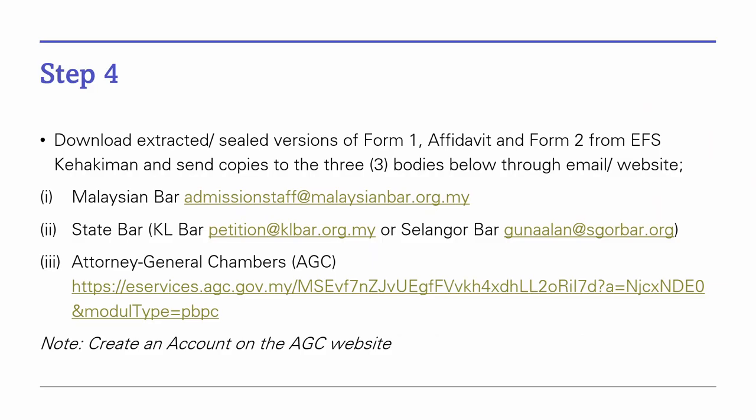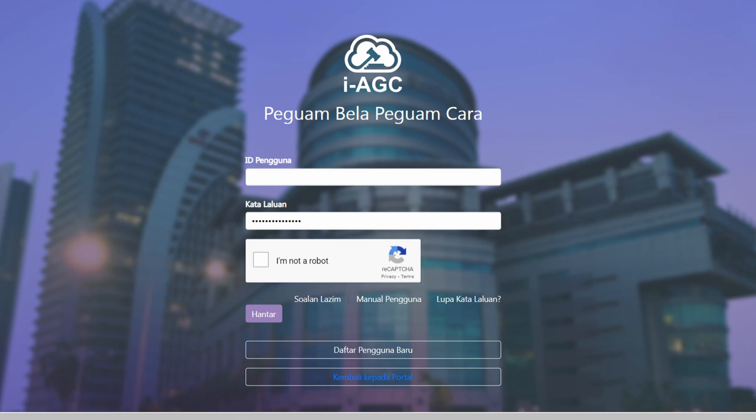Step 4: Once your documents have been sealed, download the sealed Forms 1, 2, and Affidavit, and send copies to the Malaysian Bar, your State Bar — if you're doing your chambering in KL, email it to the KL Bar email; if in Selangor, email the Selangor Bar — and lastly the Attorney General's Chambers, where you will need to create an account and upload the sealed copies from their website.